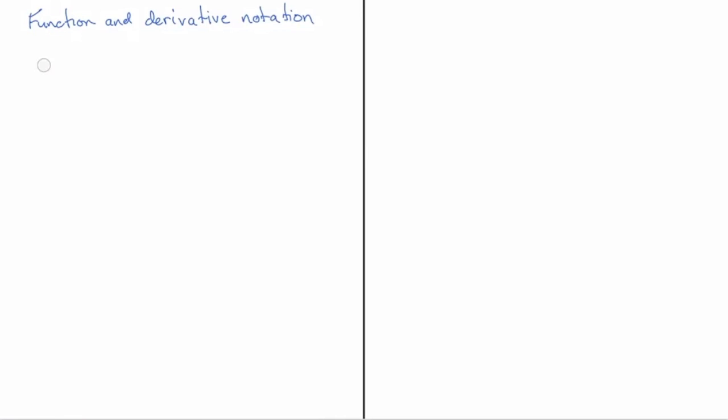So let me just give you an example. If we were talking about the function that squares things, in other words you give the function a number and out comes the square of that number, you would denote that as f(x) = x².